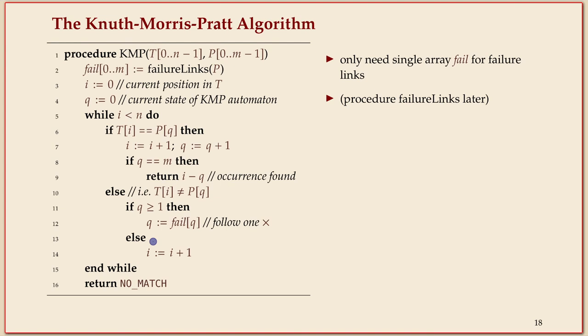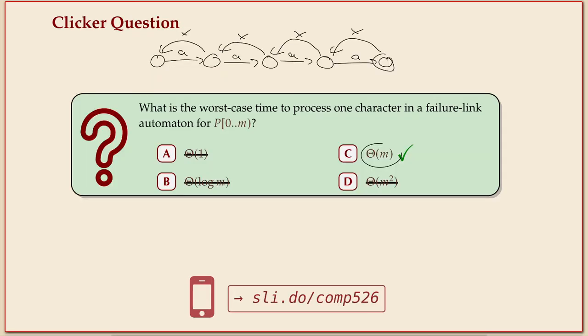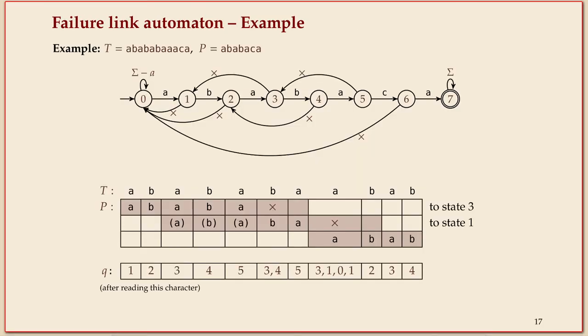And this automatically does the right thing. If we're in state zero then there is no legal failure link. So for state zero we just always go to the next position in the character, the next character in the text.